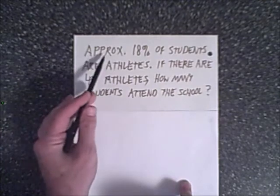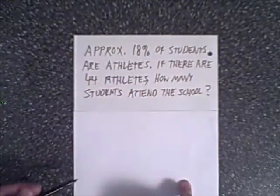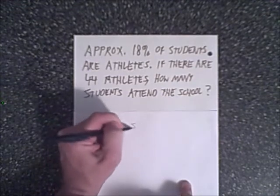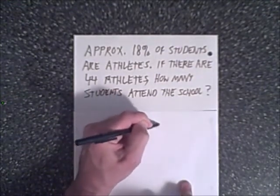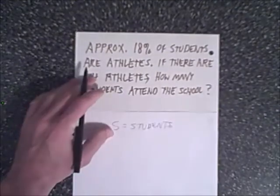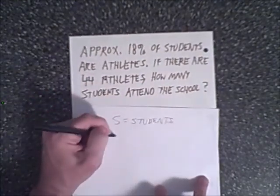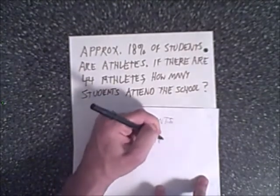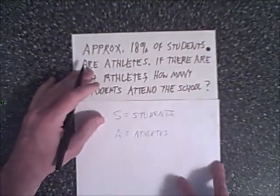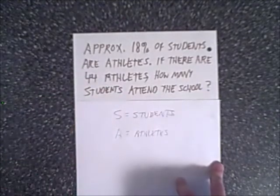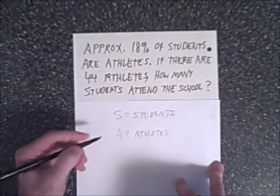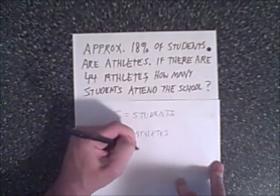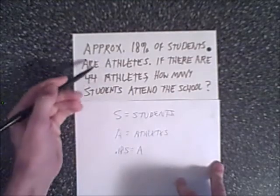Let's take a look at it phrase by phrase. Approximately 18% of students are athletes. Let's say S equals students and A equals athletes. 18% is 0.18, or 18 over 100. So 0.18 times students equals athletes, according to the first part.